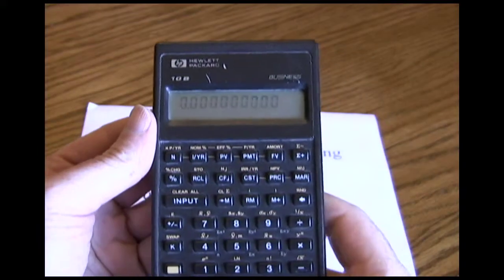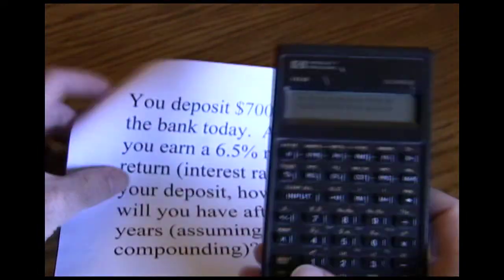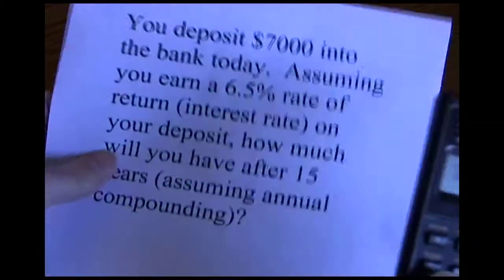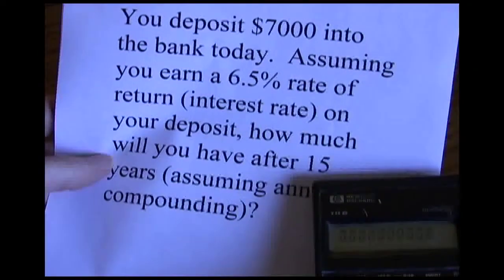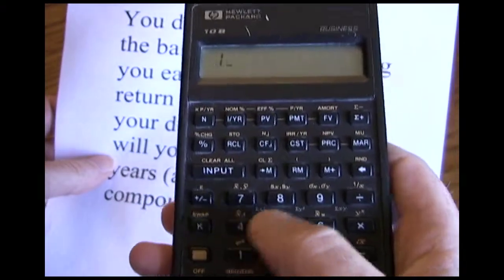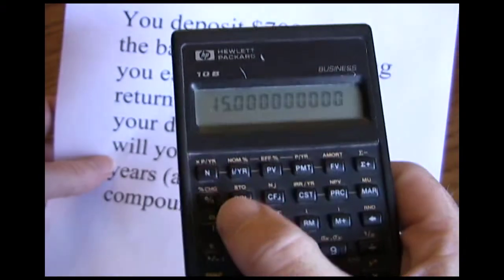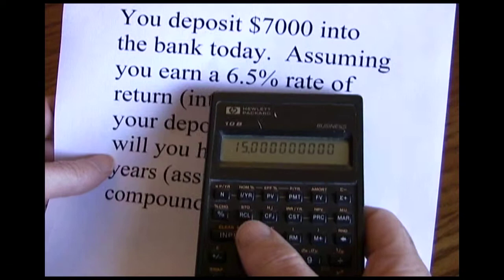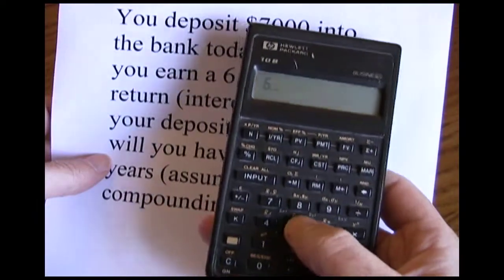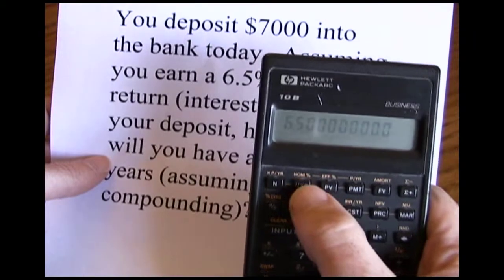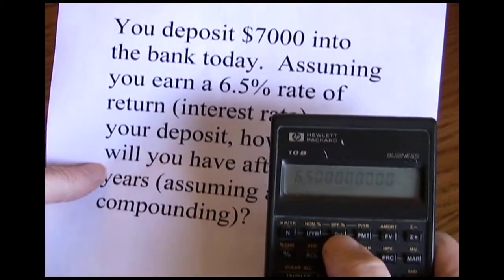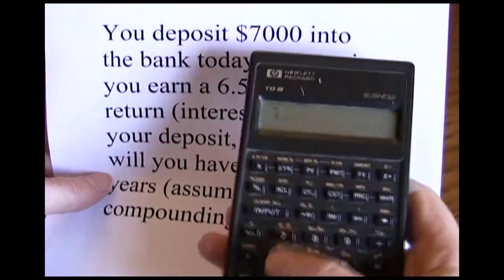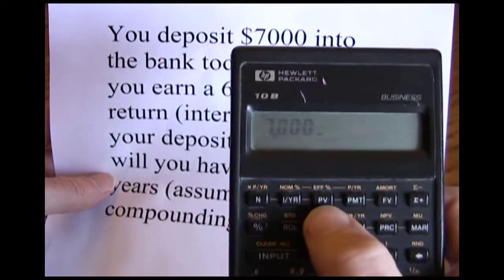Let's start with our financial calculator using the five key approach. Our first key is N — we have 15 years, so plug 15 into the N value. Next we want our interest rate; we're going to earn a 6.5% rate of return, so 6.5 is our interest. Next up is present value — that's how much we're starting with today. We have $7,000 which we're depositing today, so 7,000 is our present value.